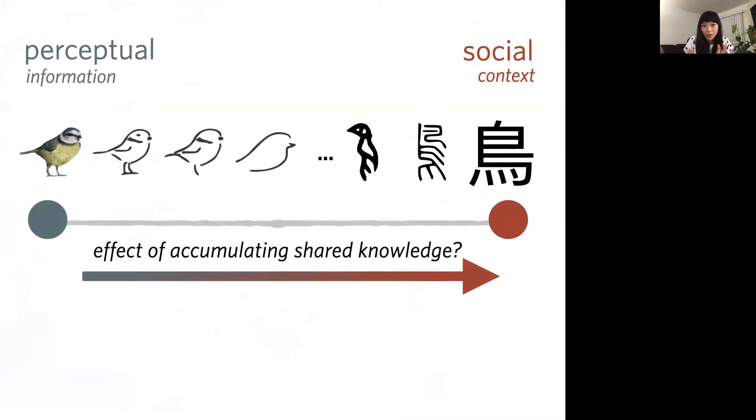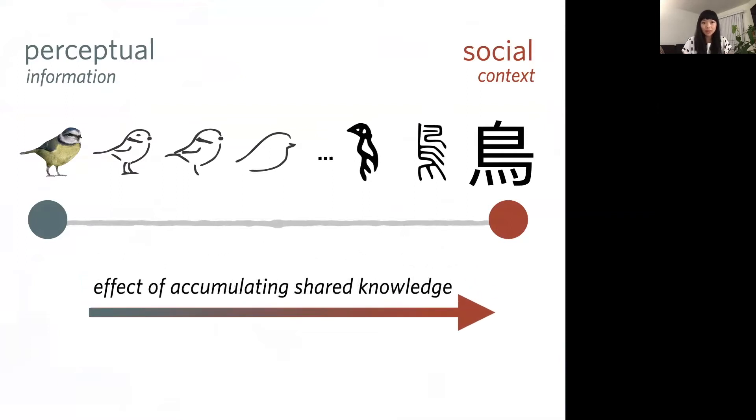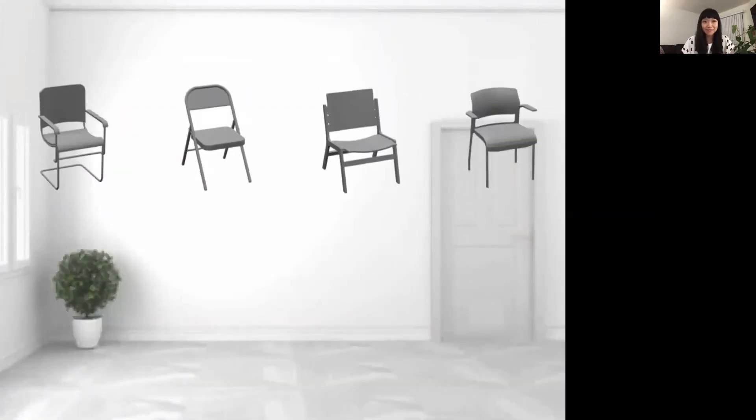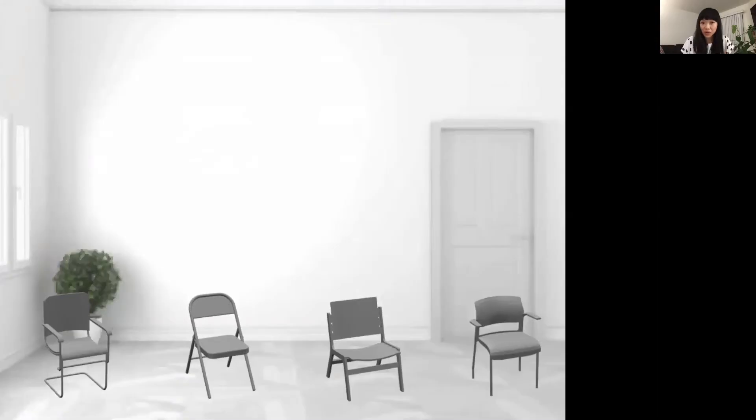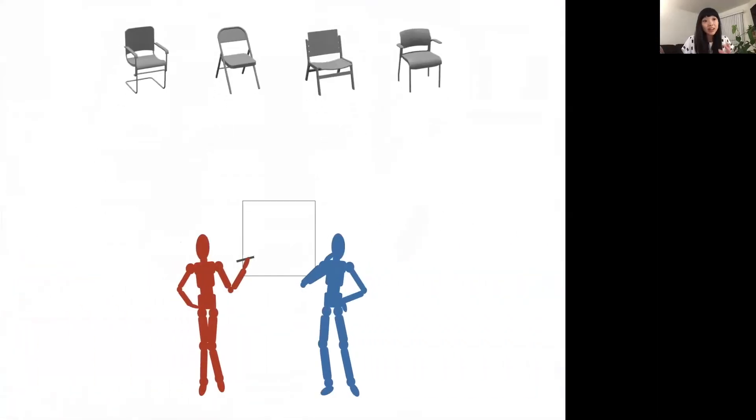And in a recent study, my collaborators and I explored this basic idea that these two sources of information trade off against one another. And we did this by varying how much shared knowledge two human participants shared, which they accumulated over the course of an extended communicative interaction with one another. Specifically, we set up an online environment, which we then furnished with realistic renderings of the most exciting objects we could think of. And then invited two people at a time to play a drawing-based reference game in which they repeatedly communicated about them.